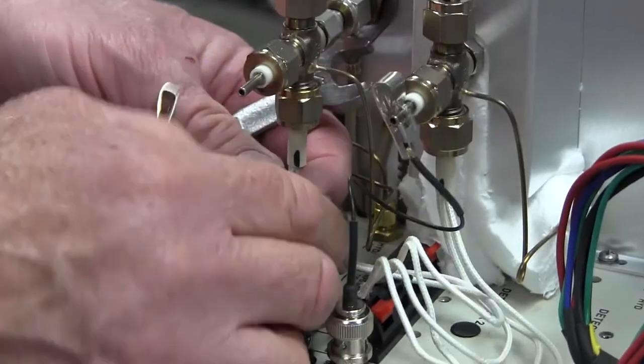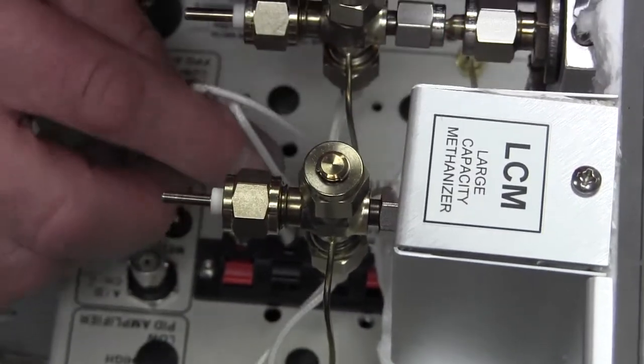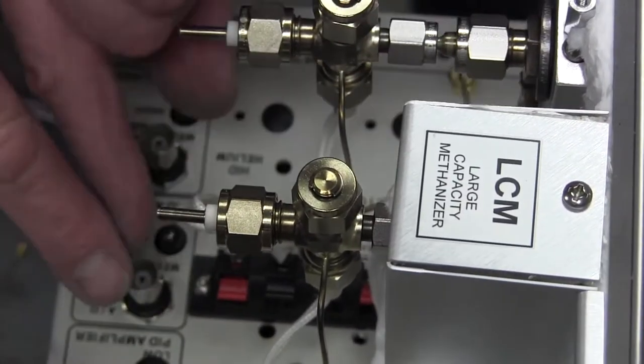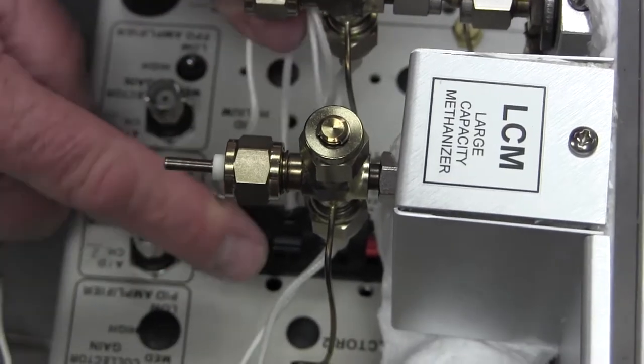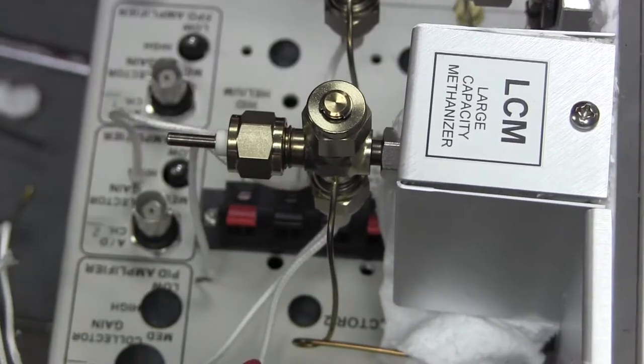It shouldn't be on super tight, it doesn't need to be, there's no pressure. So it should be easy to just spin off with your fingers like that. Then there's something called an igniter, which is the thing that's hot inside the FID that lights the flame automatically.